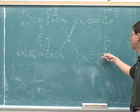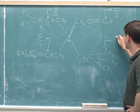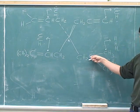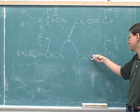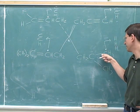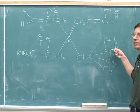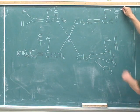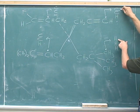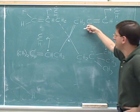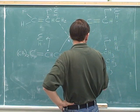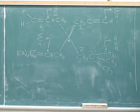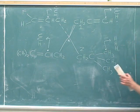Now how about this other carbon — what are the three things it's attached to? Three hydrogens. The first point of difference is between the first atom in one list versus the first atom in the other list. So on the wedge, we have our number one priority, and down in the bottom right, we have the number two priority. Now let's erase the work we used to get that.